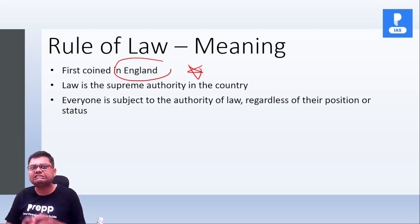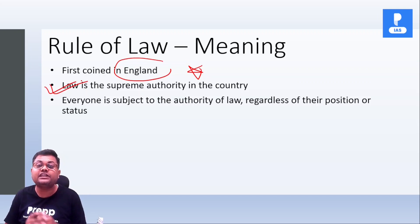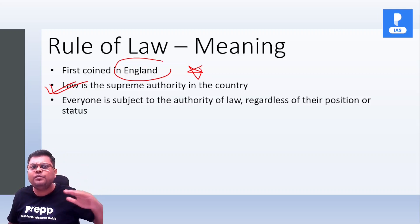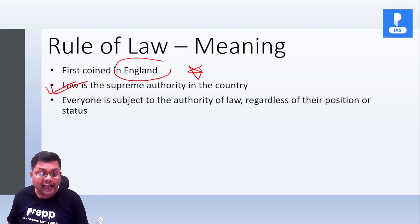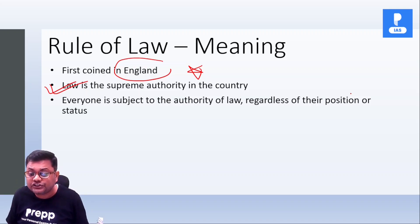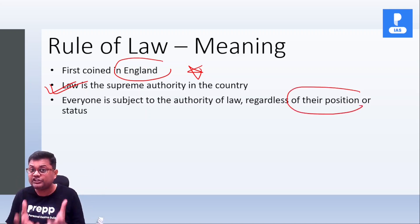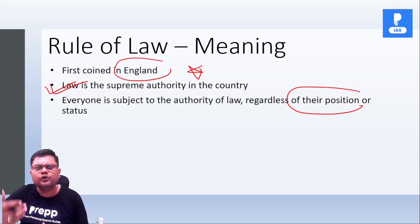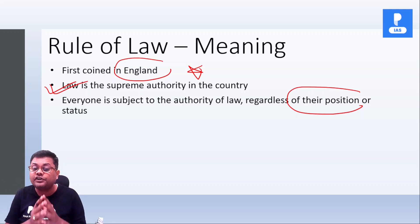Important point hai. Iska simple sa matlab ye hota hai ki law is the supreme authority in the country. Law se upar koi bhi nahi hai. Even king — wo bhi law se upar nahi hai. So law is the supreme authority, and everyone is subjected to the authority of law. Regardless of their position, it does not matter. Aap rich ho, aap poor ho, aap official ho, aap non-official ho, koi farak nahi padta hai. Aap king ho, aap lord ho, aap noble ho, koi farak nahi padta hai. Everyone will be subjected to the authority of law.